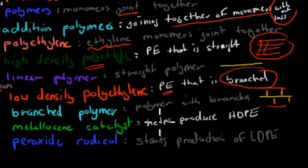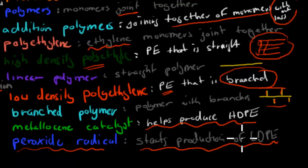A metallocene catalyst helps produce high-density polyethylene. That was the catalyst used to produce high-density polyethylene. A peroxide radical is the species which was used to start the production chain reaction when it comes to production of low-density polyethylene.